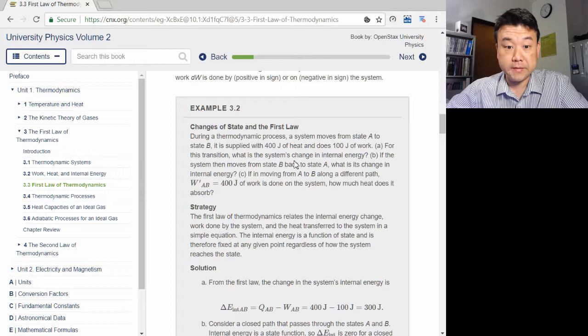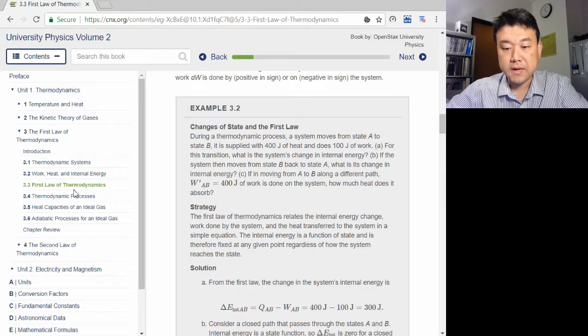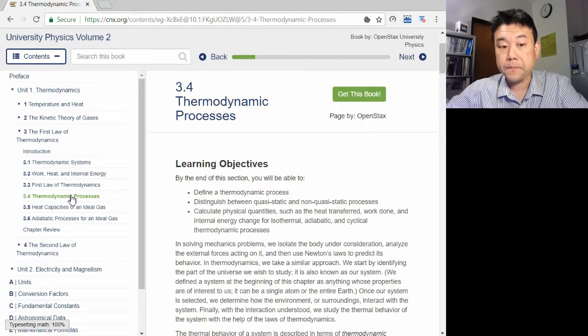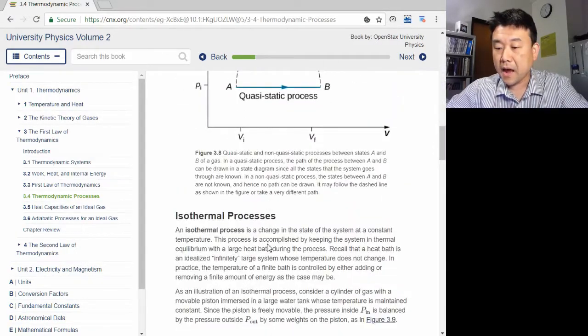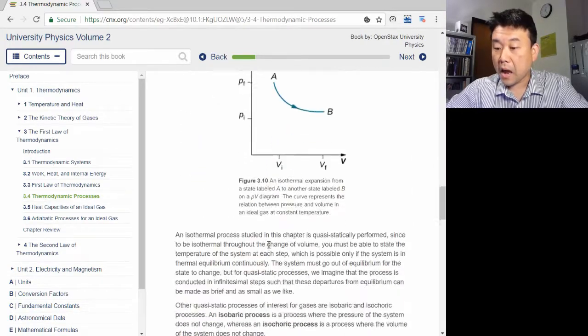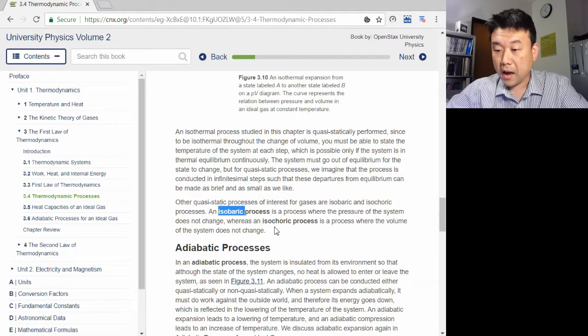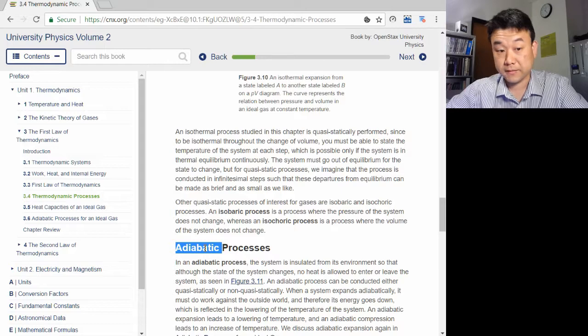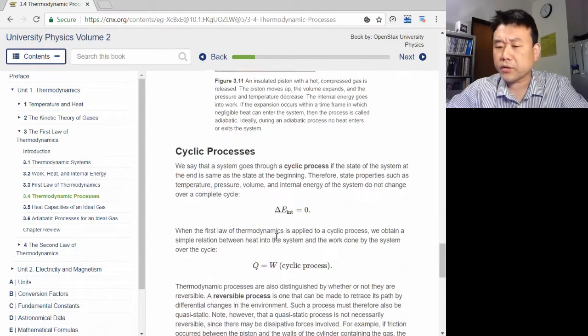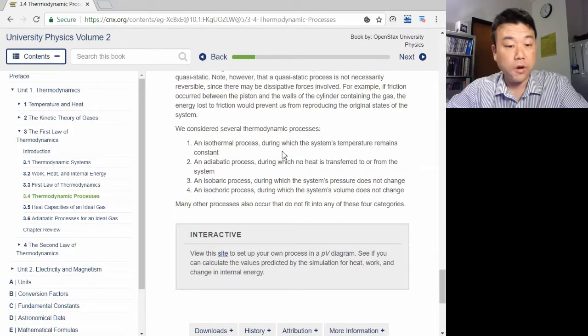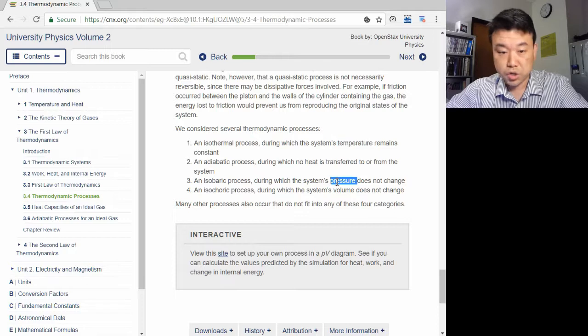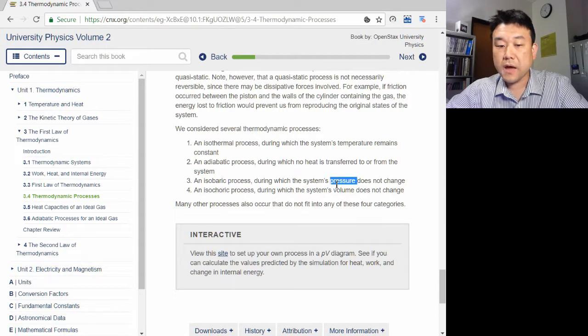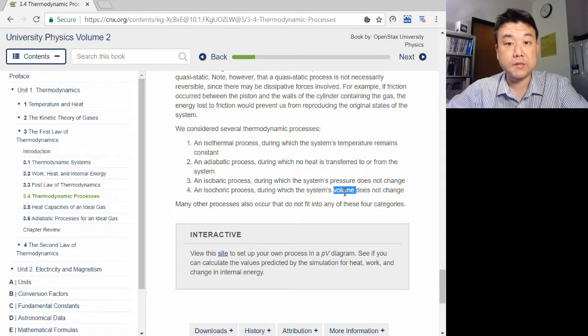The last of the three big pieces is the special named thermodynamic processes in section 3.4. There are four special processes given special names: isothermal, isobaric, isochoric, and adiabatic processes. They are characterized by having a particular quantity held constant. In an isothermal process, the temperature of the system is constant. In an isobaric process, the pressure of the system is constant. In an isochoric process, the volume of the system is constant. In an adiabatic process, the heat transfer is zero.